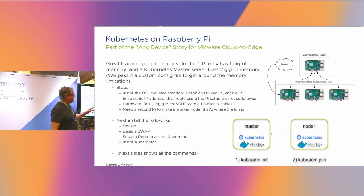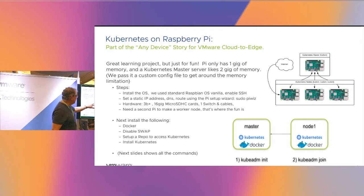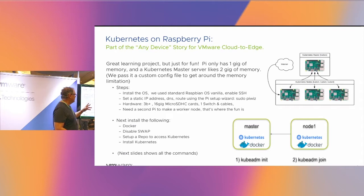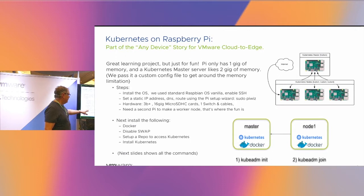We have a master node — we can run this on a Raspberry Pi 3 or 4, we're running a 4. Then we have worker nodes which are 3s. We have to install the operating system, set static IP addresses, DNS routes. You load an SD card with Raspbian — we use generic Raspbian, you don't need a special OS. You need a second Pi for a worker node. A home Kubernetes lab costs about $120 — two Raspberry Pis and a small network. We'll install Docker, disable swap, set up a repo for our image, and then install Kubernetes.